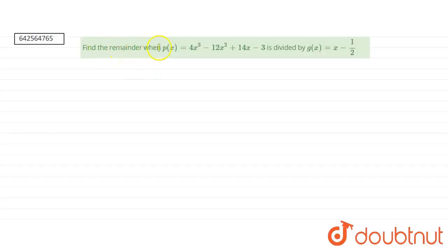Find a remainder when P of X is equal to 4X cubed minus 12X squared plus 14X minus 3 is divided by G of X that is X minus 1 by 2.